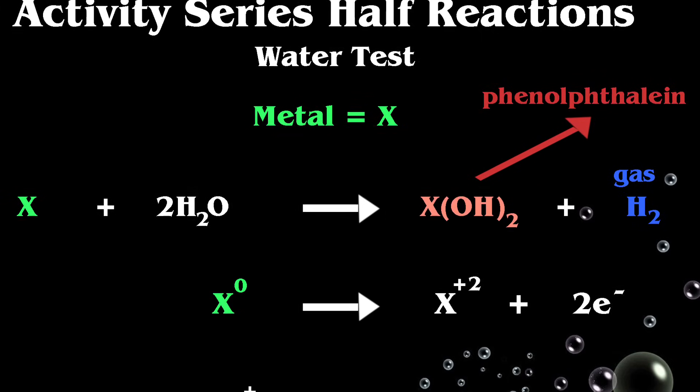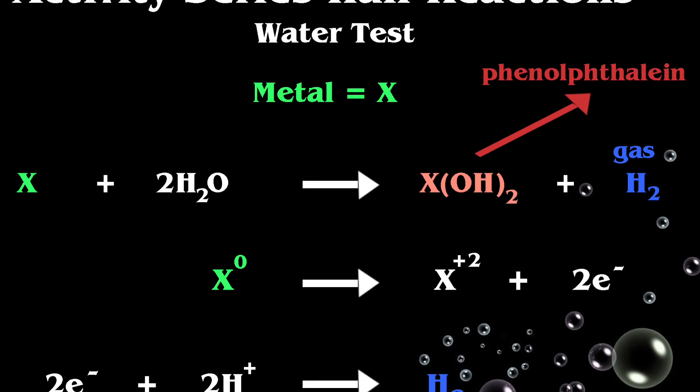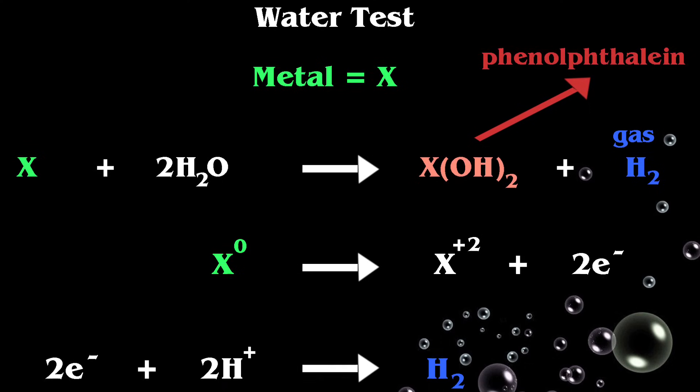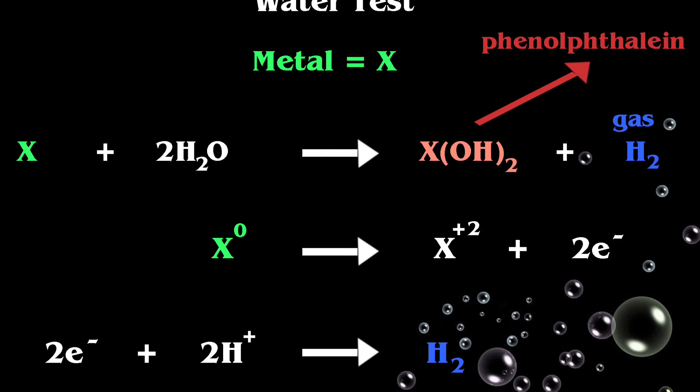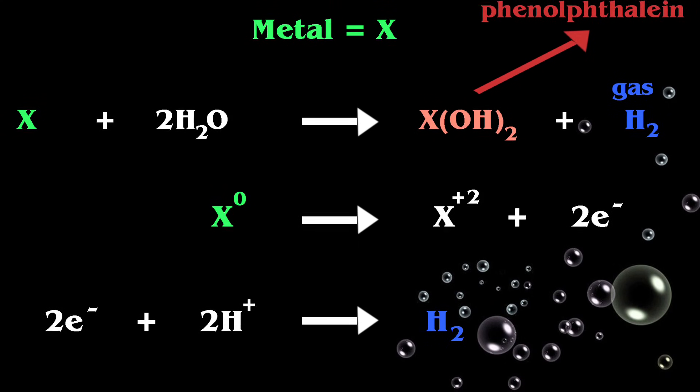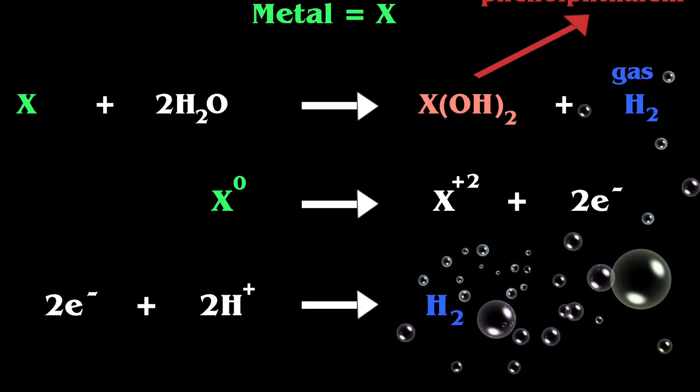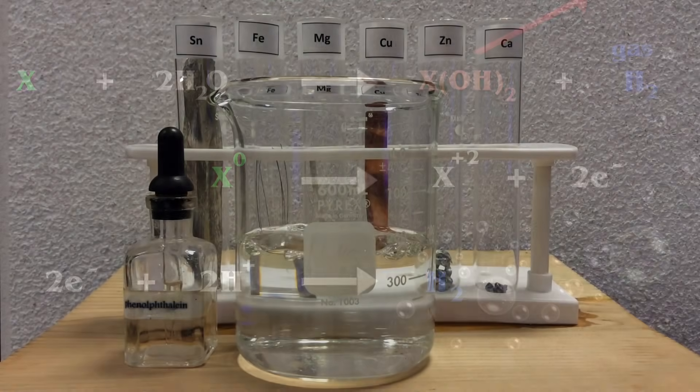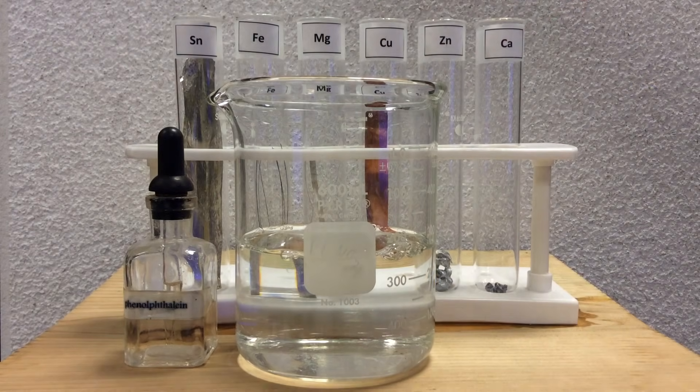And we can actually measure the amount of base being made with the chemical indicator phenolphthalein. So in the half reactions, we're basically reducing the H plus, whether it comes from the water or it comes from an H plus of an acid. And the protons in the solution become reduced into hydrogen gas.